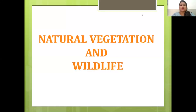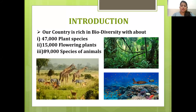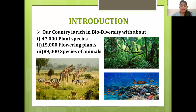Hello everyone, I am Tanushi Chatterjee. Today we are going to cover the topic natural vegetation and wildlife. We all know our country India is rich and it is very biodiverse. We have about 47,000 plant species, 15,000 flowering plants and 89,000 species of animals.